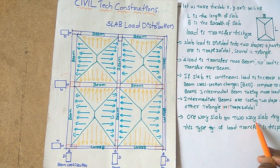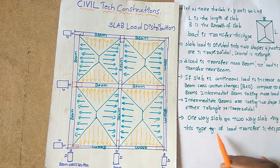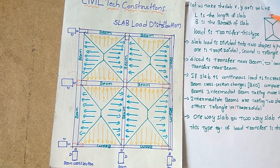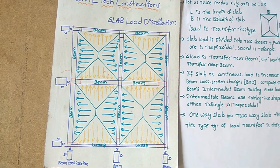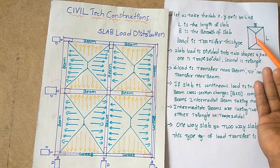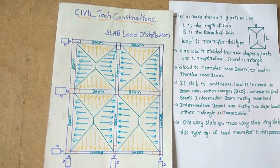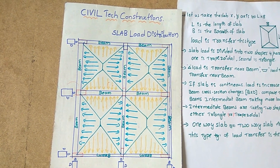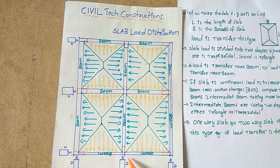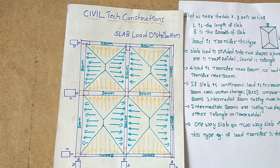For one-way slab or two-way slab — any slab — this type of load is transferred. This is the process: the load is distributed from the slab in this manner, as shown in the diagram. Compared to the end beams, the intermediate beam is deeper.